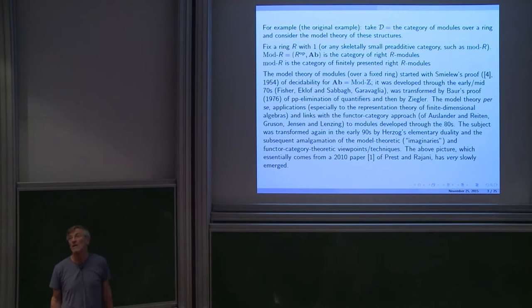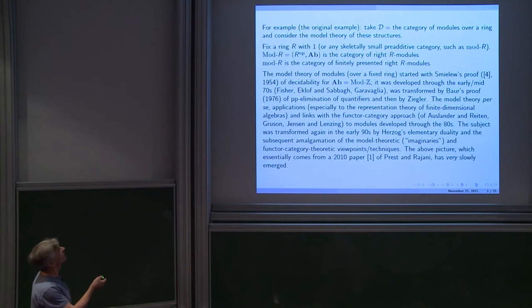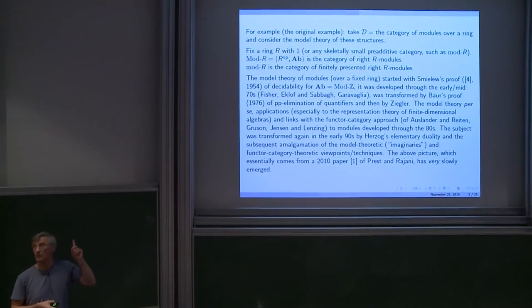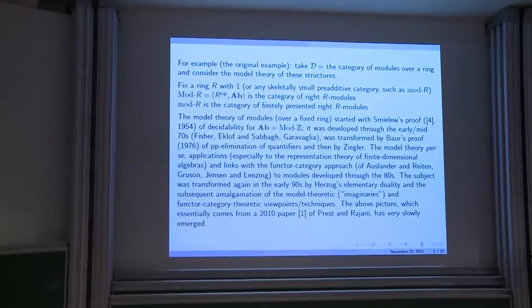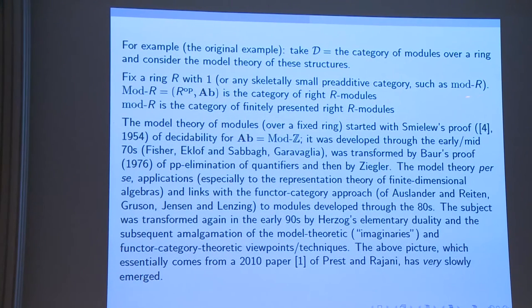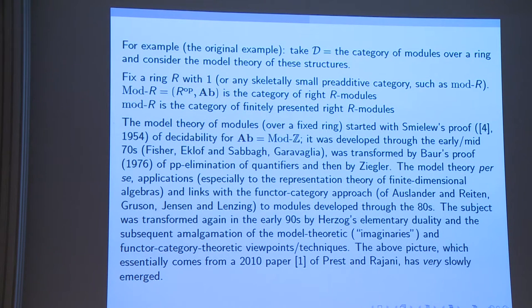I will begin with the original example of a definable category, which is just a category of modules over a fixed ring. We fix a ring with one, or just take any skeletally small pre-additive category — so the ring is the case where there's just one object. This notation means the category of finitely presented right R-modules. Mod R is the category of all right R-modules — additive functors from R^op to abelian groups. Little mod is for the category of finitely presented modules: finitely generated and finitely related. Alternatively, a module is finitely presented if the covariant representable functor commutes with directed colimits.